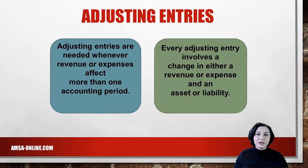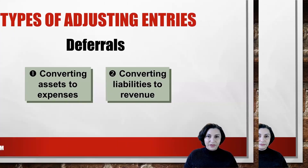At the end of the period, we need to make adjusting entries to get the accounts up to date for the financial statements. Adjusting entries, also known as end-of-period adjustments, are journal entries that accountants prepare at the end of an accounting period to make sure the revenues and expenses are accurately recorded in the appropriate accounting period. The accrual basis dictates that revenues be recognized when earned and expenses be recognized when incurred. The accrual basis of accounting is considered to be in compliance with generally accepted accounting principles. Every adjusting entry involves a revenue or expense and an asset or liability. There are two broad categories of adjustments: deferrals and accruals.